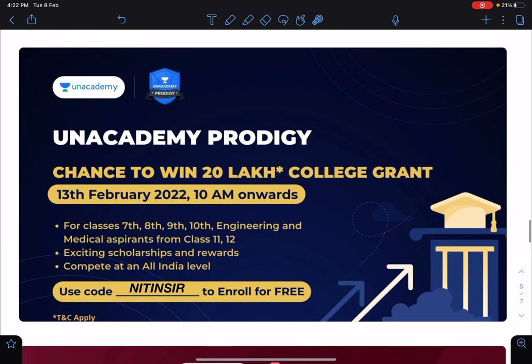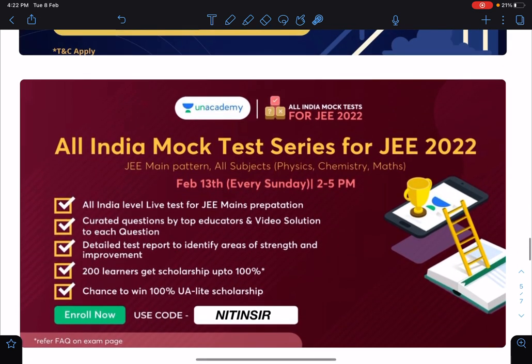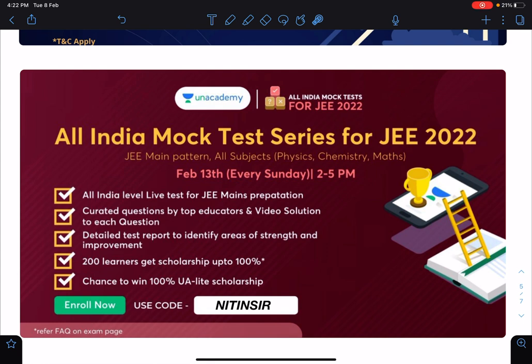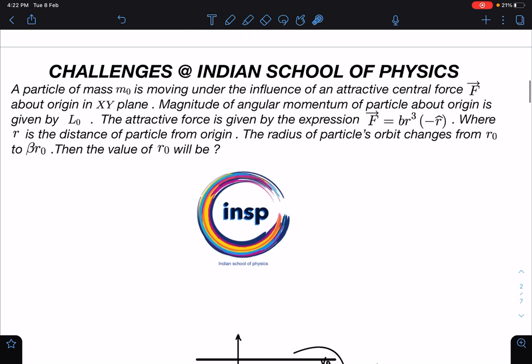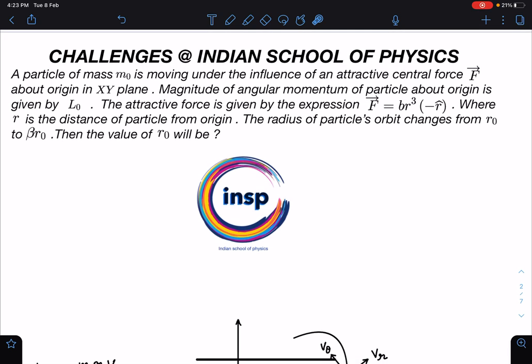Unacademy Prodigy test is going on and the next round of exam is on 13th February. Around 4 lakh plus students have written this exam so far, you can enroll for free. All India mock test series is going on for JEE Advanced 2022 and Mains 2022. This is free of cost and every Sunday 2 to 5 PM there will be a test. That's it guys, I hope you have enjoyed this sample problem of Talent Hunt. Thank you, thanks for watching.